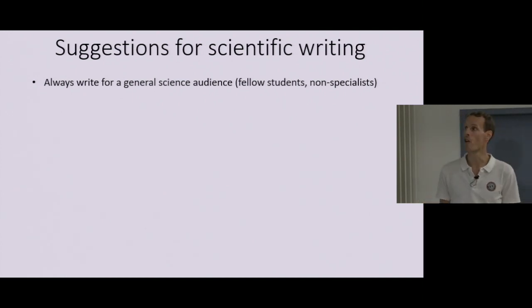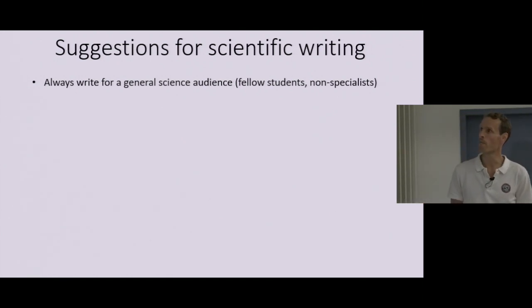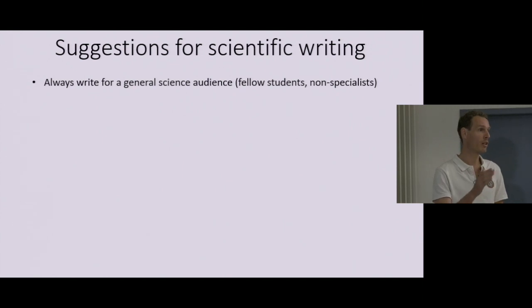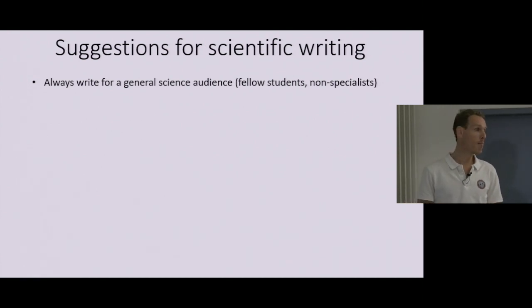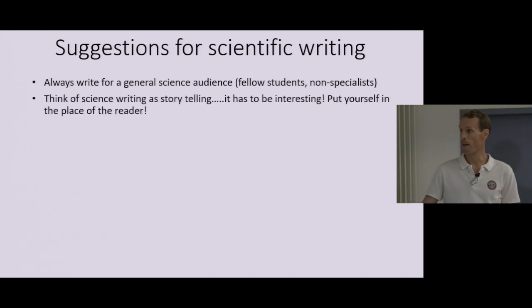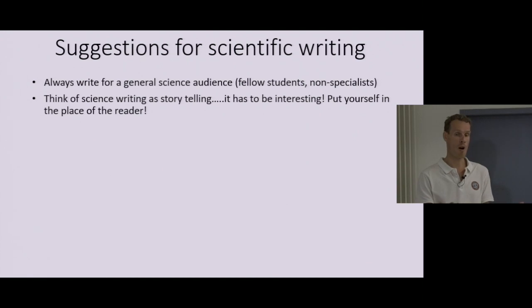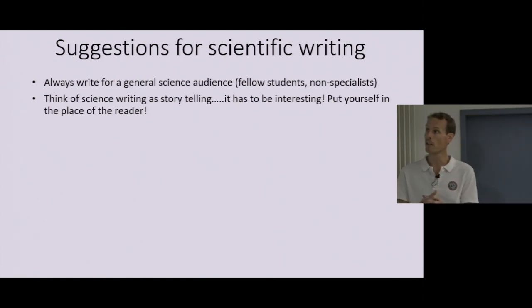Always try to write for a general science audience — not for your grandmother, but for fellow students or non-specialists, people who do not work particularly on your topic and know exactly all the right words in your field. This makes your writing much more interesting to a much larger audience. Think of science writing as storytelling. We've all read papers where we just don't understand what the writing team is talking about, because it's not very well written.